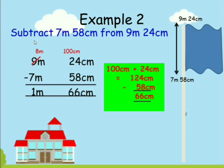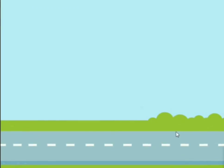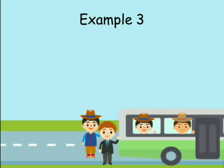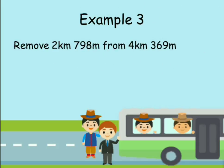Example three: a group of students are going on excursion over a distance of 4 kilometers 369 meters to two places. After a distance of 2 kilometers 798 meters they reached their first destination. How much distance do they have to cover before reaching the second destination? We need to remove the distance already covered — 2 kilometers 798 meters — from the total distance of 4 kilometers 369 meters.